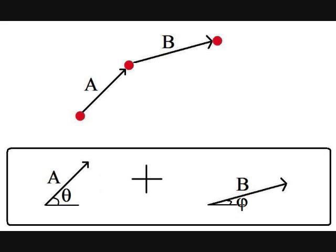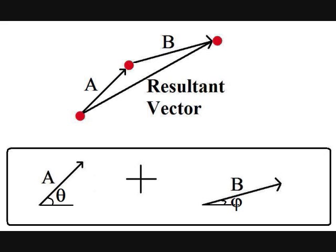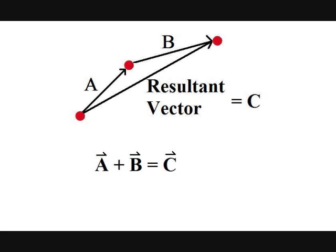The resultant displacement can be traced from the initial position to the final position, since that itself is a displacement associated with its own specific distance and direction. So vector A plus vector B equals what I will call vector C.